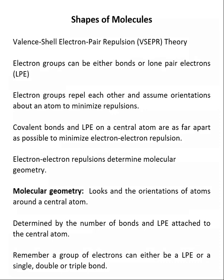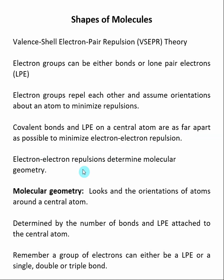When we discussed the Lewis theory of molecular bonding, we mentioned that we couldn't use Lewis structures to come up with molecular structure. To predict the shape or geometry of a molecule, we need to apply what's called the valence shell electron repulsion theory, which is also called VSEPR. Electron groups can either be bonds or lone pair electrons, and the theory says that these electron groups repel each other to assume orientations around a central atom to minimize repulsions. Covalent bonds and lone pair electrons on a central atom push each other as far apart as possible, and it's really these electron-electron repulsions that determine molecular geometry.